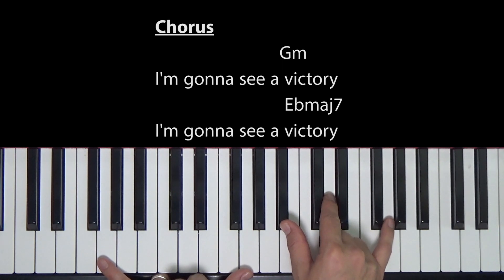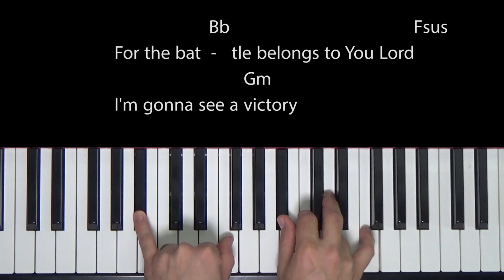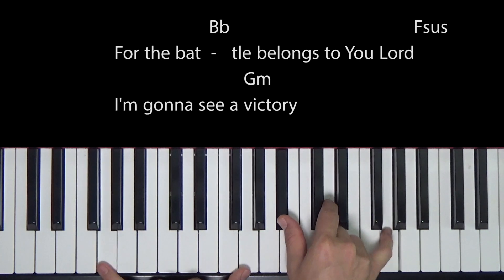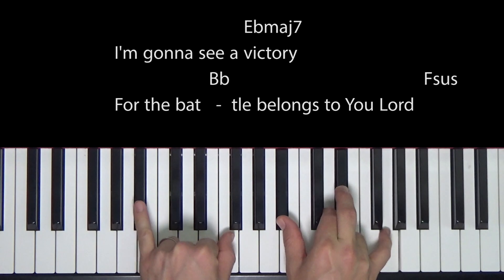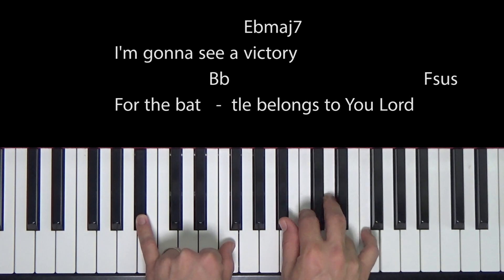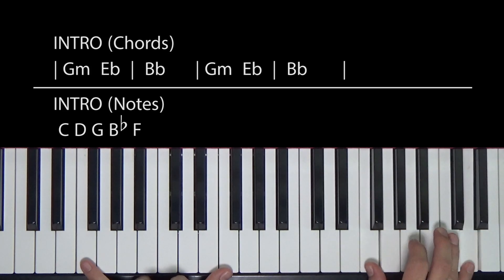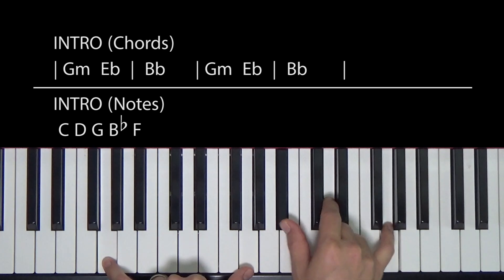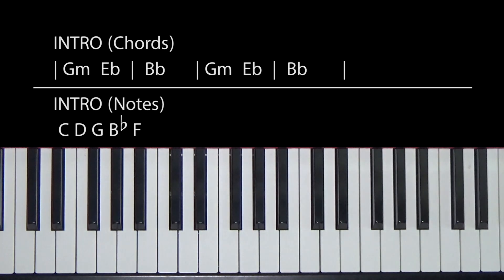So let me sing and play through that. One, two. I'm gonna see a victory. I'm gonna see a victory. For the battle belongs to you, Lord. I'm gonna see a victory. I'm gonna see a victory. For the battle belongs to you, Lord. Intro. And then I hit like double notes together. So then you go into the intro. All right. So that's the chorus part.